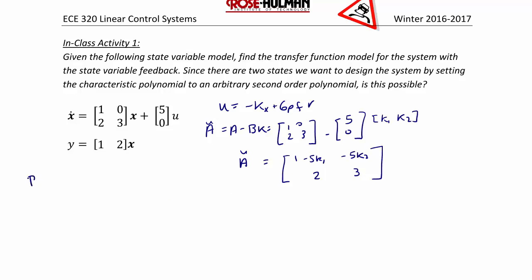b tilde is equal to b times the gain of the pre-filter. So b tilde is equal to [5 gpf; 0]. c tilde is simply equal to c, and d tilde would be equal to d gpf, but since there is no d, that's equal to 0.